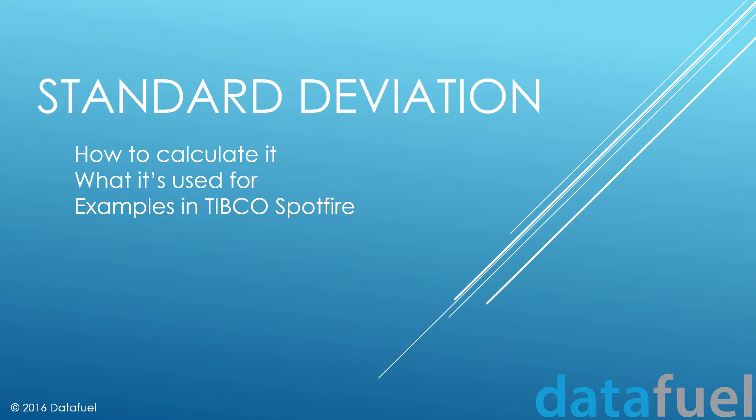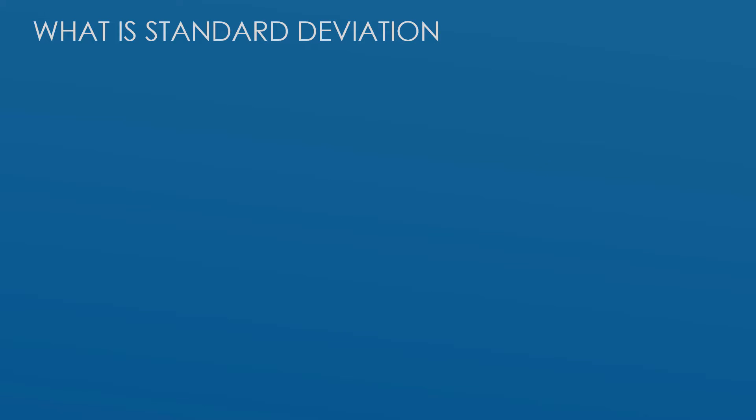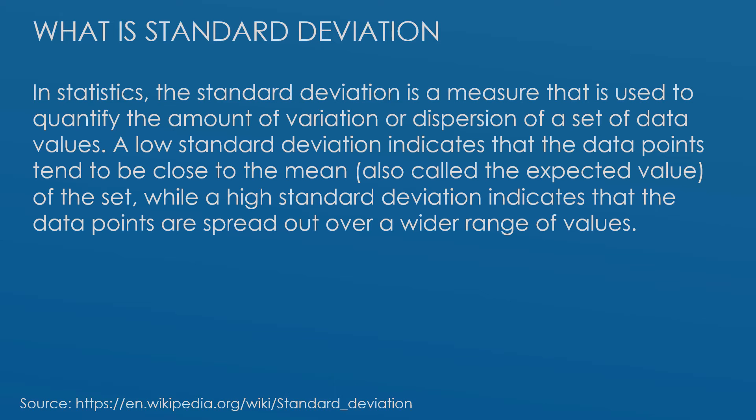Okay, so first off, what is standard deviation? The long definition, which I pulled from Wikipedia, is shown on the screen. In statistics, the standard deviation is a measure that is used to quantify the amount of variation or dispersion of a set of data values.